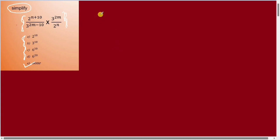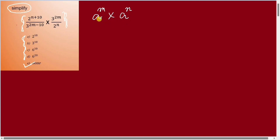So the concept of a to the power m: a is the base and m is the power. So the problem is a to the power m into a to the power n.